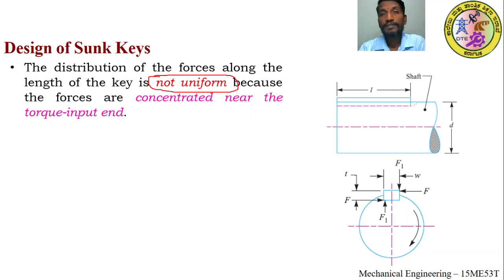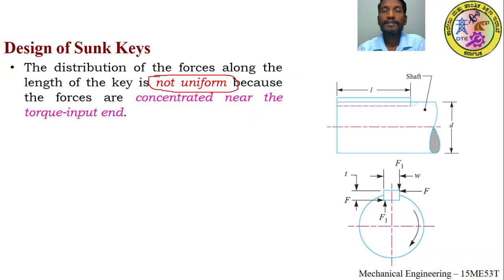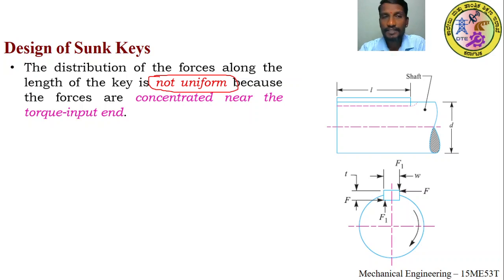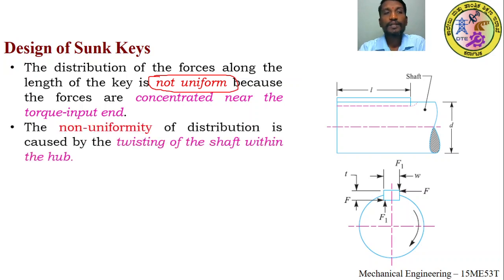Wherever the input of the torque is, in that region the forces are more concentrated, which is why the distribution is not uniform — it is concentrated near the torque input end only. The non-uniformity of distribution is caused by the twisting of the shaft within the hub.